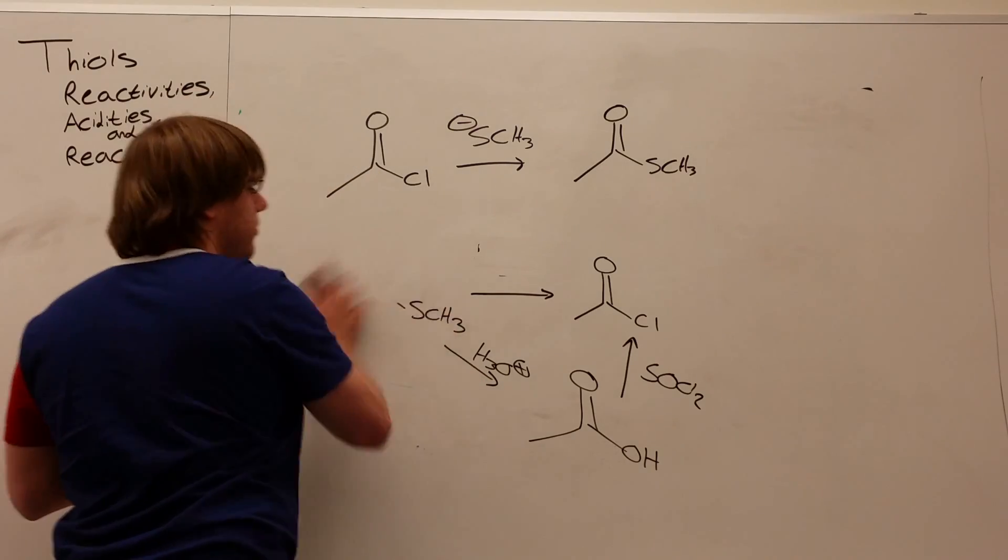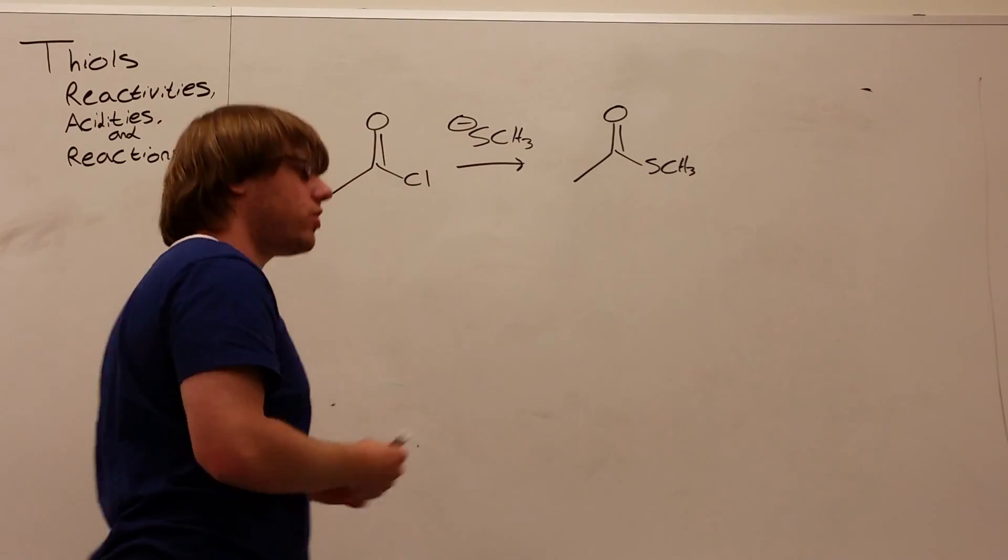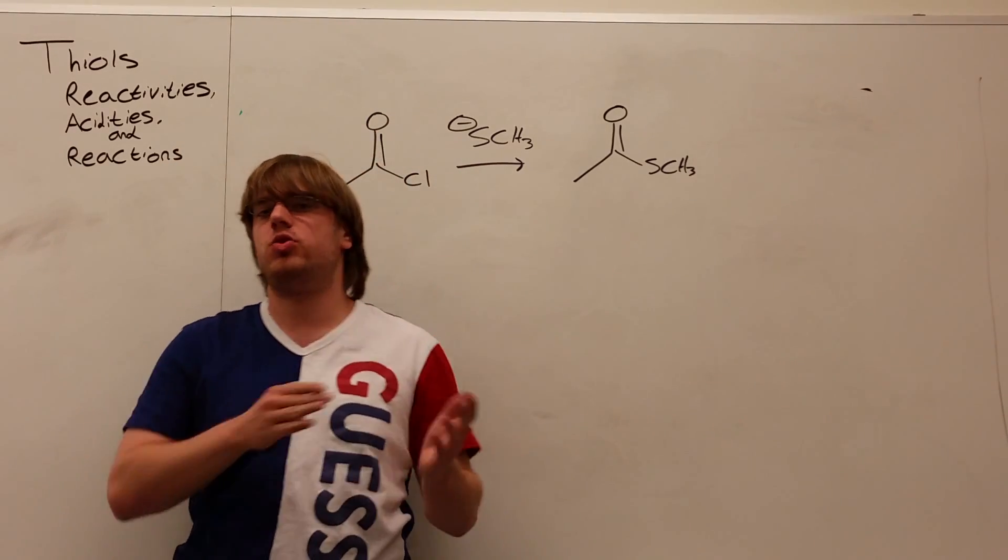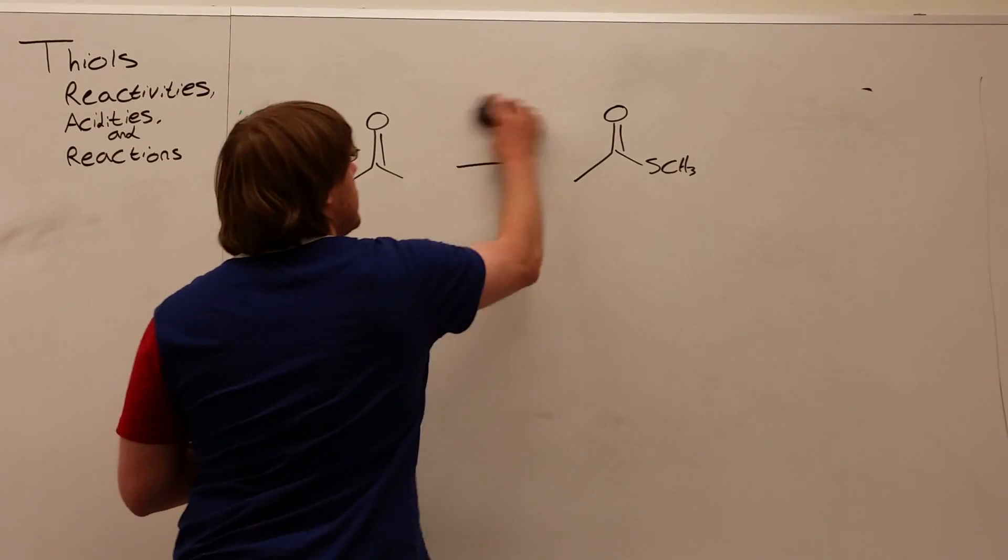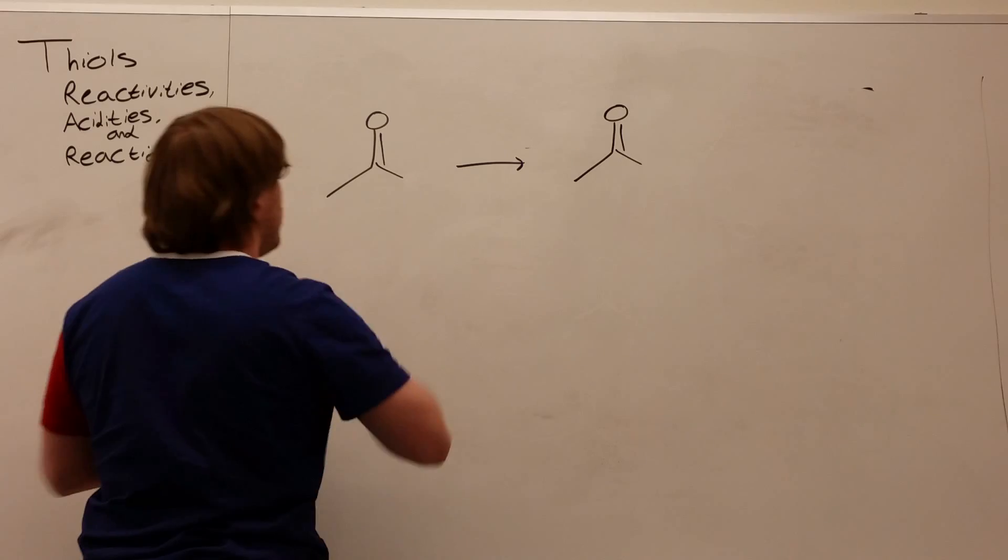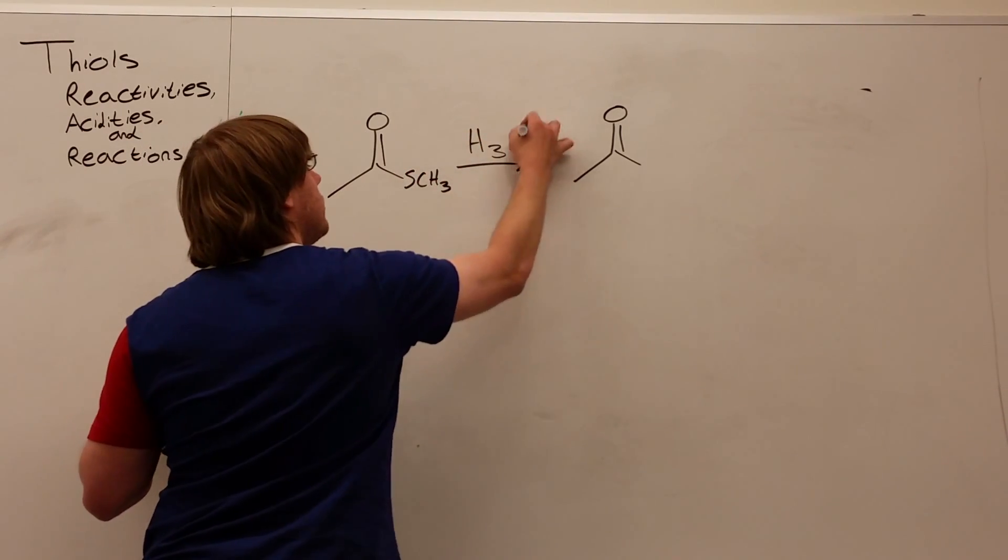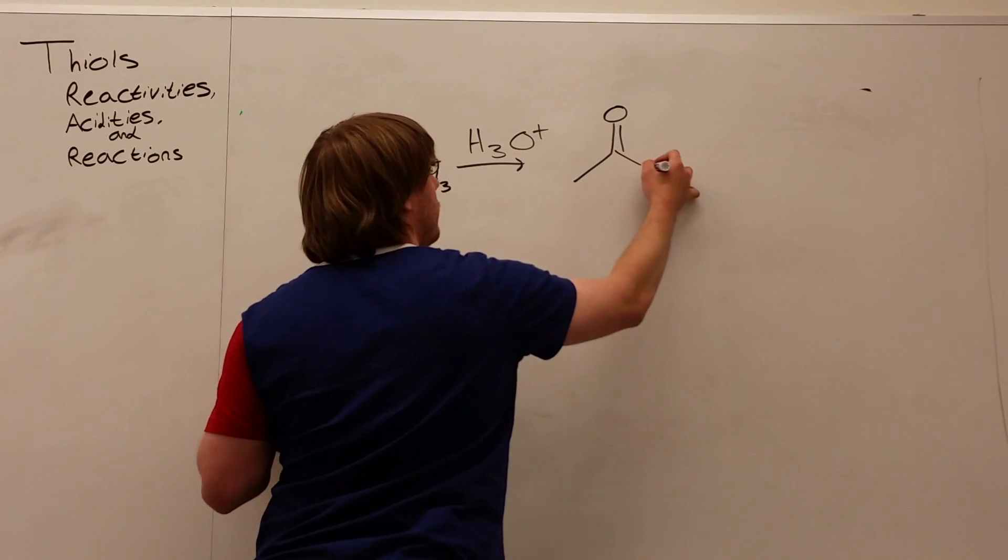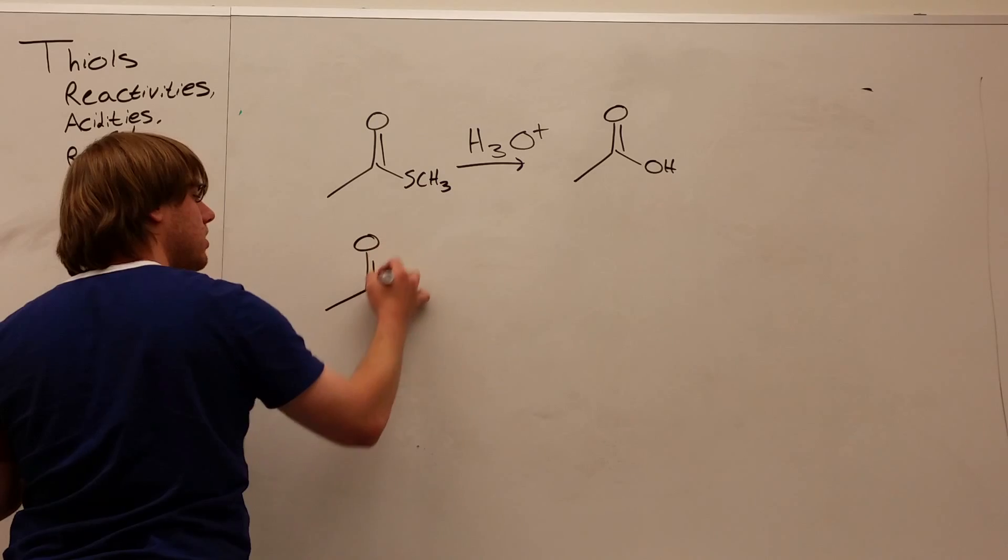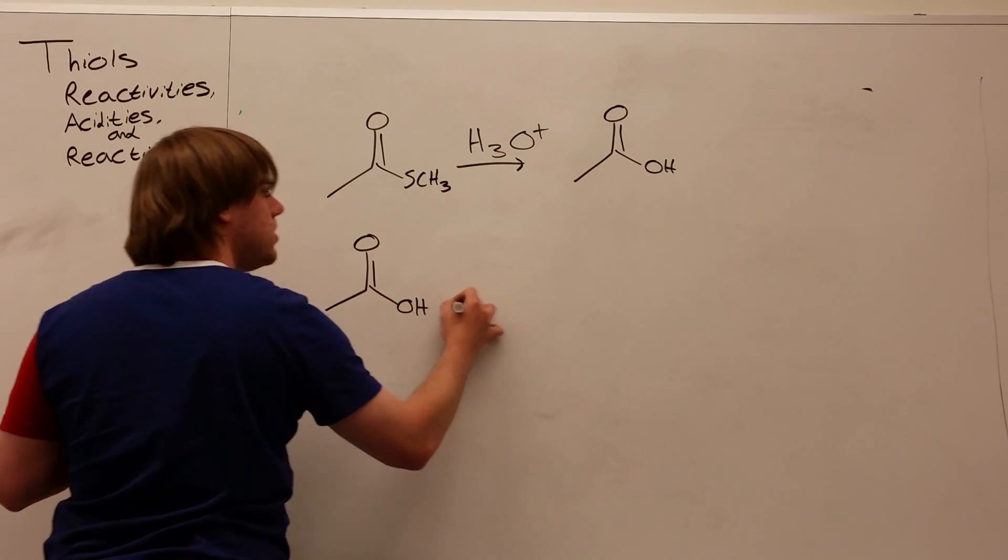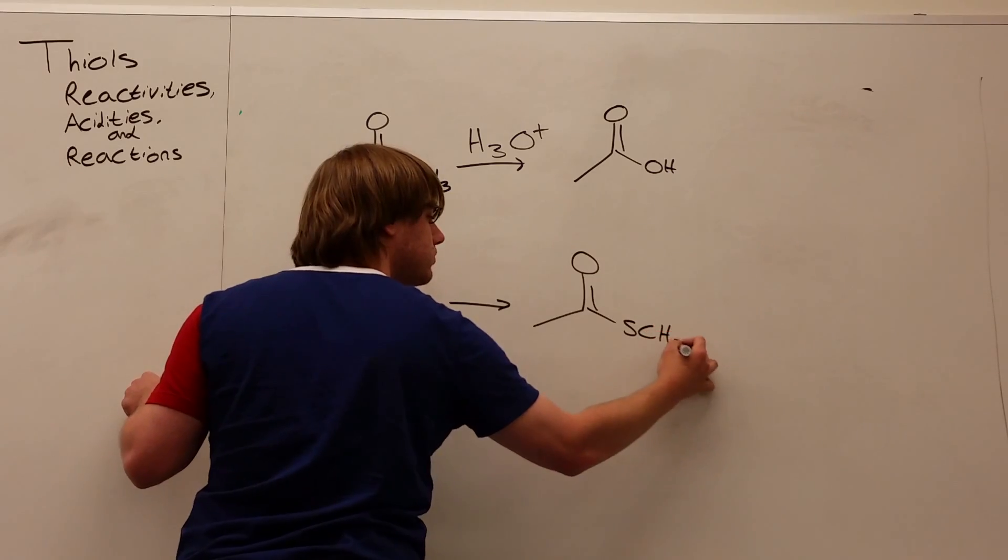Now, for an additional useful reaction for synthesis, I think it's worth showing how do we turn carboxylic acid into a thioester going forward. So we saw that if we want to turn a thioester into carboxylic acid, all we needed was H3O positive. But what about going in the other direction? What if I wanted to turn carboxylic acid into a thioester?